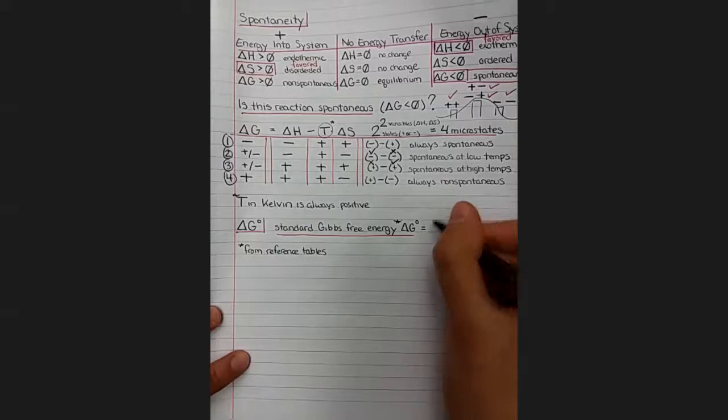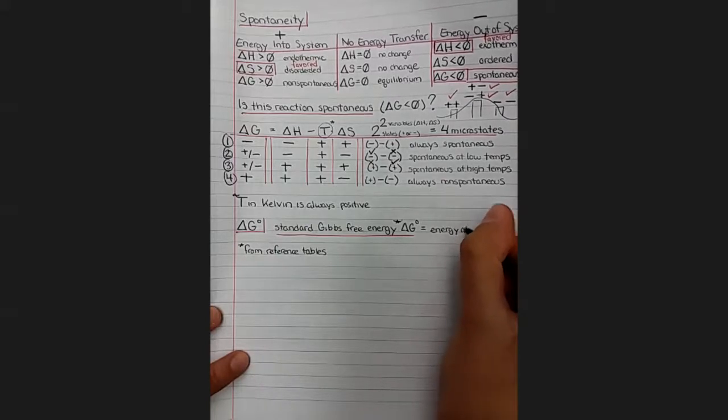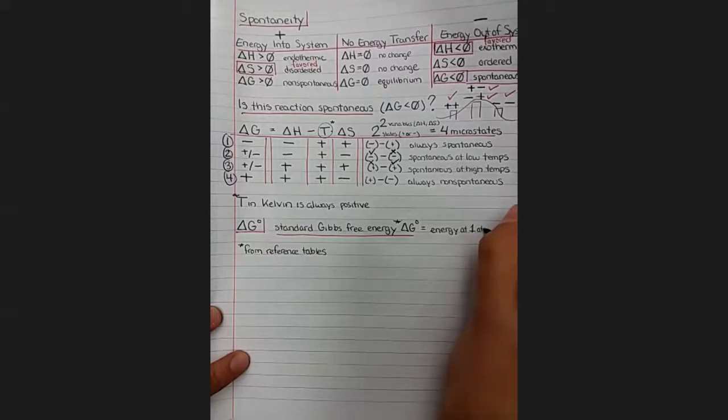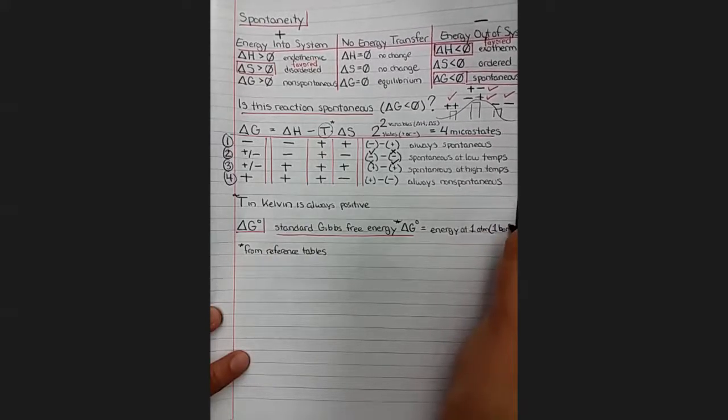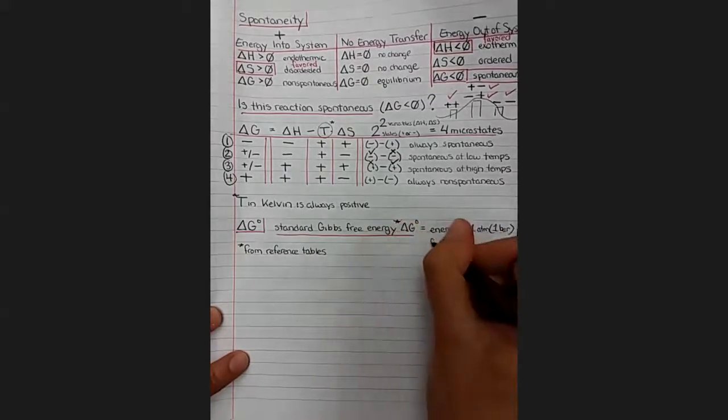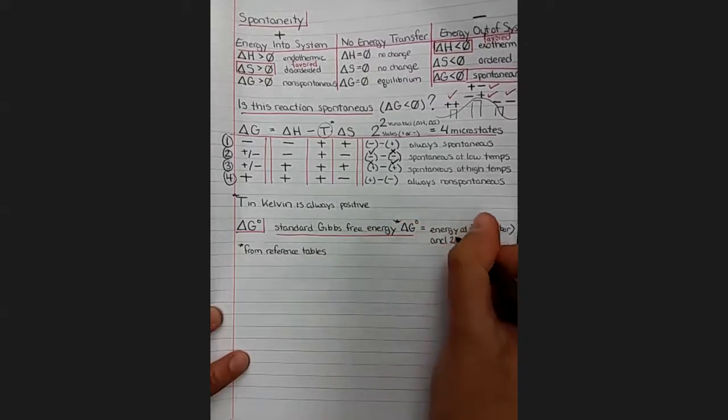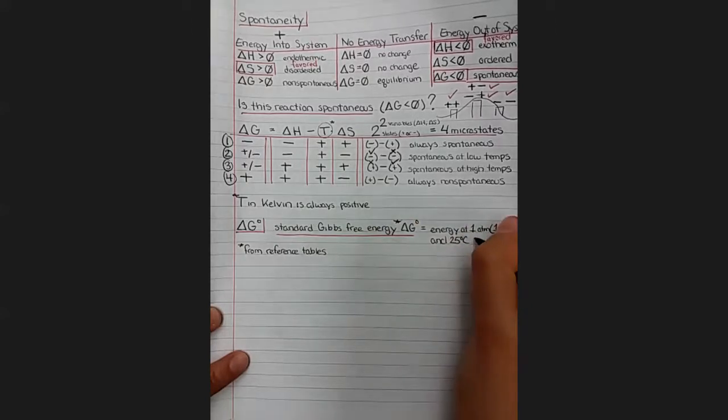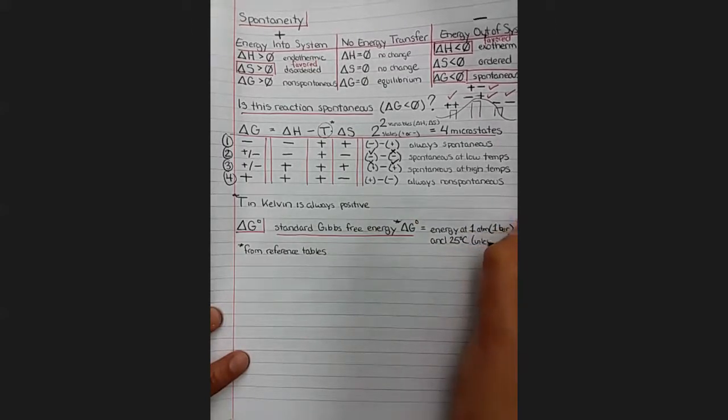Okay, so the standard Gibbs free energy is the energy at one atmosphere or more technically at one bar and 25 degrees Celsius unless specified.